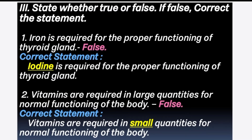3rd section: State whether true or false; if false, correct the statement. 1st question: Iron is required for the proper functioning of the thyroid gland. Answer is false. Correct statement: Iodine is required for the proper functioning of the thyroid gland. Iron is required for the formation of hemoglobin. 2nd question: Vitamins are required in large quantities for normal functioning of the body. Answer is false. Correct statement: Vitamins are required in small quantities for normal functioning of the body.